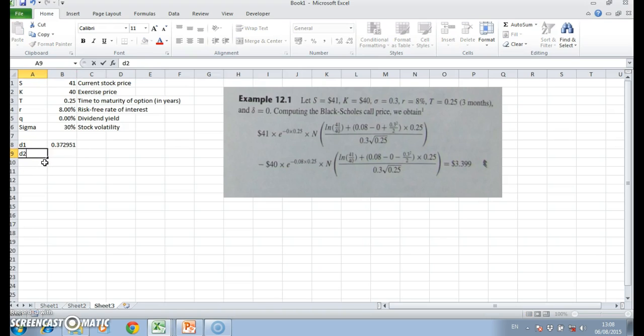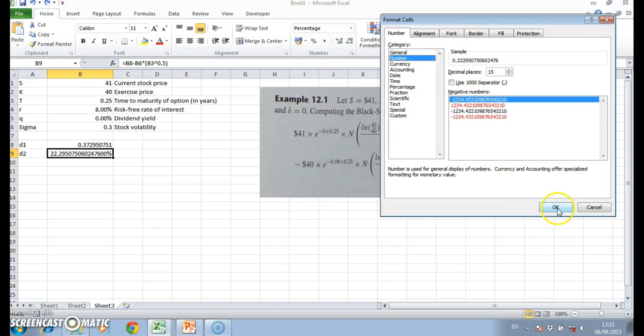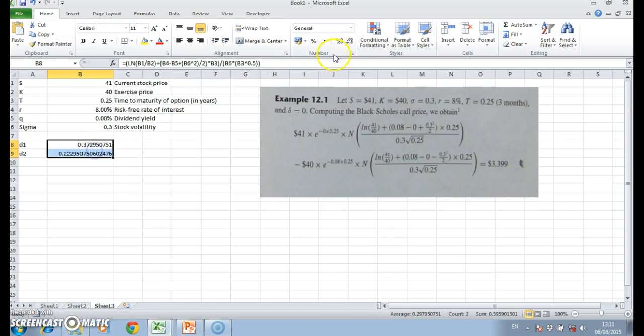To estimate d2, d2 is equal to d1 minus sigma multiplied by the square root of time. So again we take the time period and put the power of 0.5, because to the power of 0.5 is equivalent to taking the square root. That needs to change to a decimal, so let's come up here and just change to a number, maybe we'll go four decimal places.